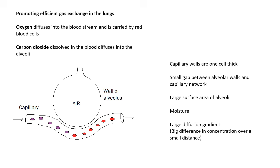Gas exchange: oxygen goes from the air inside the alveoli, and the oxygen diffuses into the capillaries. The oxygen is carried by red blood cells. The red blood cells have this pigment called haemoglobin, and the oxygen molecules tag on to it — it becomes oxyhaemoglobin and it becomes bright red. So oxygen diffuses from the alveoli into the bloodstream. Carbon dioxide is in the liquid of the blood, called the plasma, and that diffuses into the alveoli.